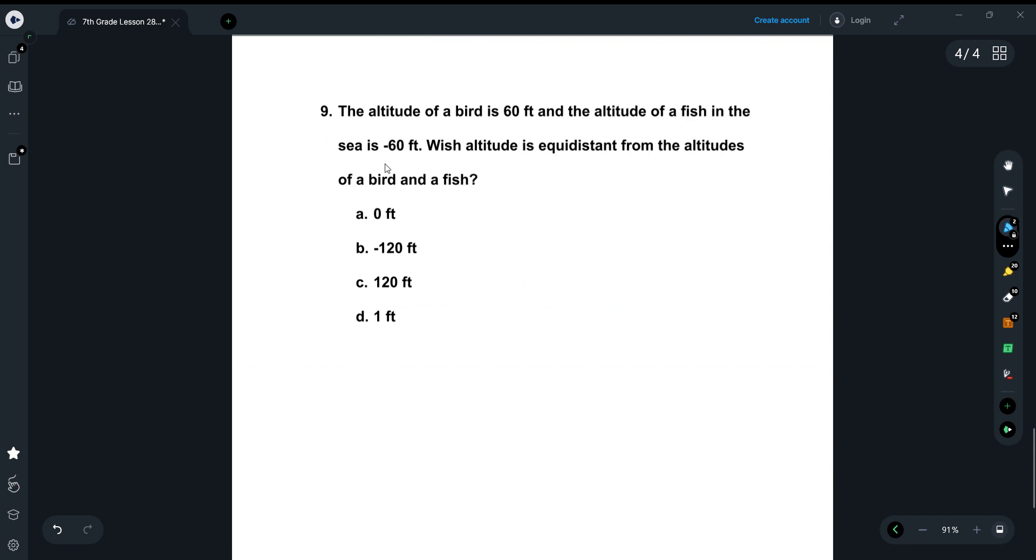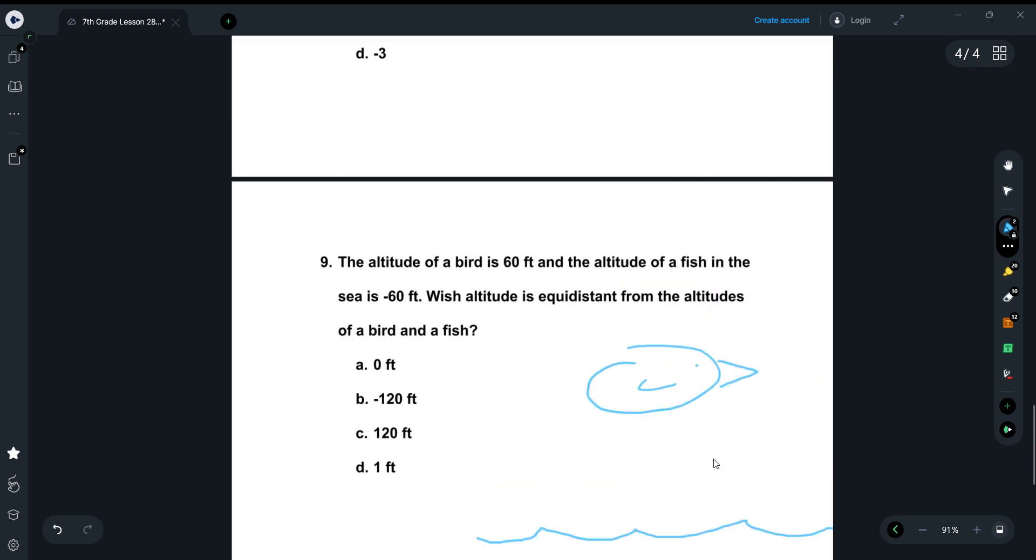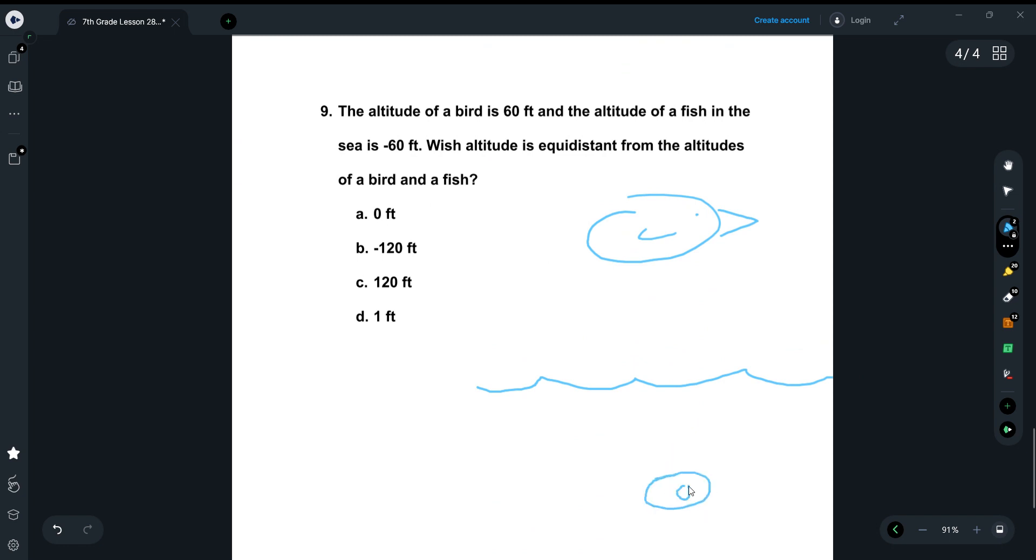So basically, the altitude of a bird is 60 feet and the altitude of a fish in the sea is negative 60 feet, which altitude is equidistant from the altitudes of the bird and the fish. So basically, the bird is up here. That's a terrible drawing of a bird. And then we have the sea right here, and then we've got a fish. A fish like that. Okay. Now the distance from here to here is 60. Distance from here to here is 60, right? And then the distance from here to here is negative 60, or it could be 60. Technically it's 60 because distance cannot be negative. But we'll just say it's negative 60 for now.